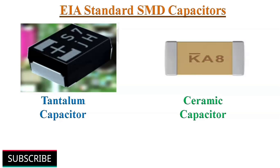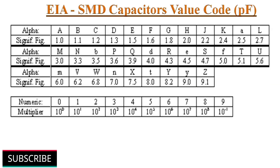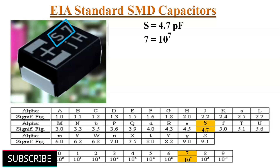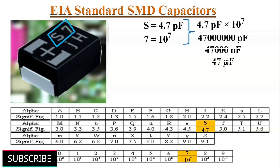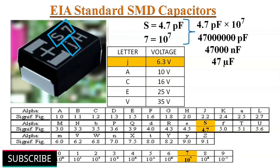SMD tantalum and ceramic capacitors are often marked with a two-digit EIA code — an alphabet letter and a numerical number — to indicate their value. A table shows the letter code and its significant figure value in picofarads, and the numeric code and its corresponding multiplier. For example, S7 printed on an SMD tantalum capacitor means S represents 4.7 picofarads and 7 represents a multiplier of 10 to the power of 7, giving 47 microfarads. The letter J at the bottom indicates a voltage rating of 6.3 volts, so it is a 47µF 6.3V capacitor.